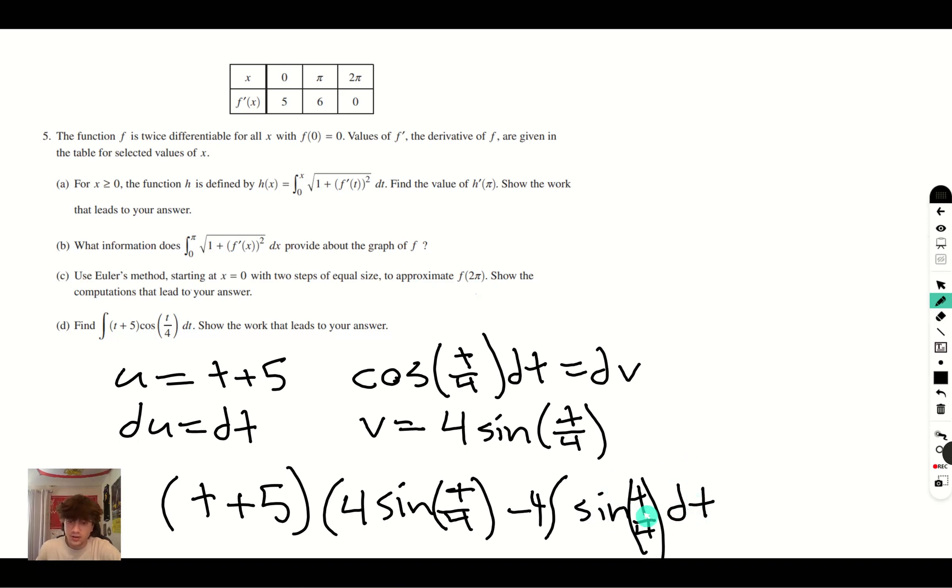The integral of sin(t/4) dt is going to be -4cos(t/4). When we multiply the two negative 4s, we get 16cos(t/4). So we get 16cos(t/4).